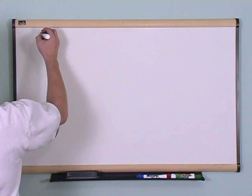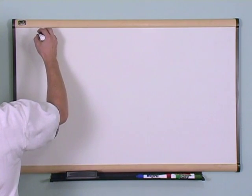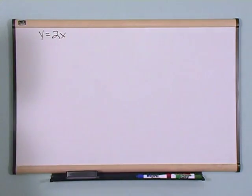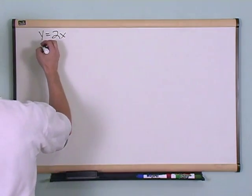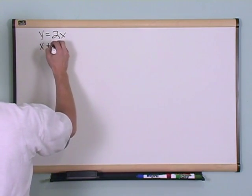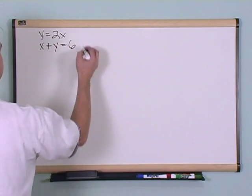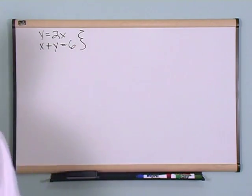Let's say you have a system of equations like this. Y is equal to 2x, and the second line is x plus y is equal to 6, and I want to solve this system of equations.